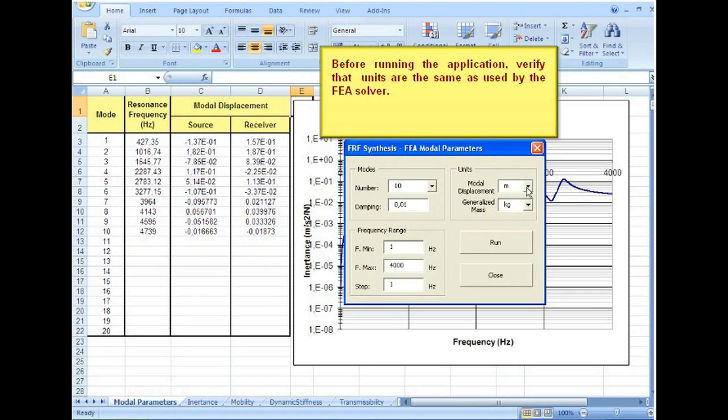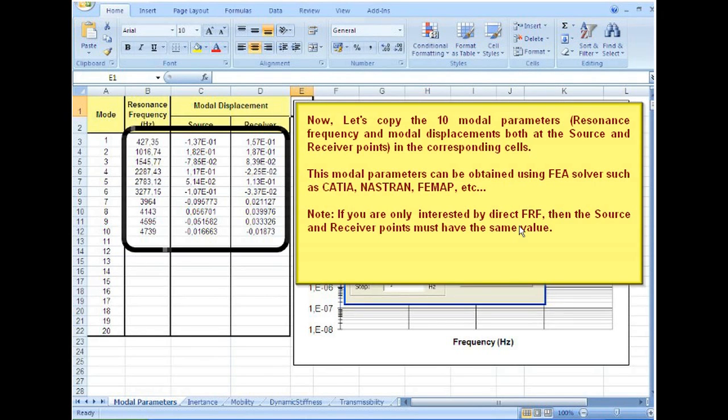Before running the application, we'll find that units are the same as used by the FEA solver. Now let's copy the 10 model parameters in the corresponding cells. These model parameters can be obtained using FEA solver such as CATIA, NASTRAN, or FEMFAP. Note: if you are only interested in direct FRF, then the source and receiver points must have the same value.